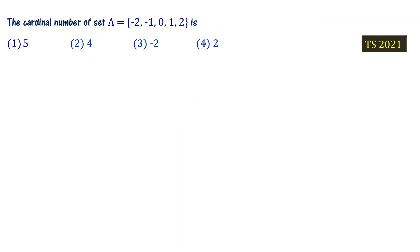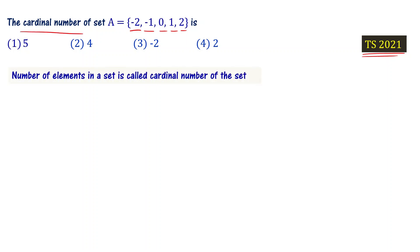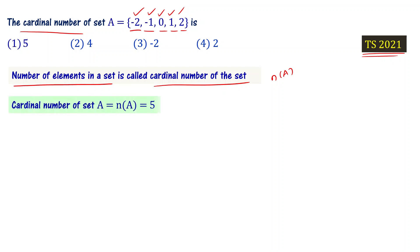The cardinal number of set A containing elements -2, -1, 0, 1, and 2 — this is a Telangana policy 2021 question. The cardinal number of a set is the number of elements in the set. There are 5 elements, so n(A) = 5. Choice 1 is the right answer.